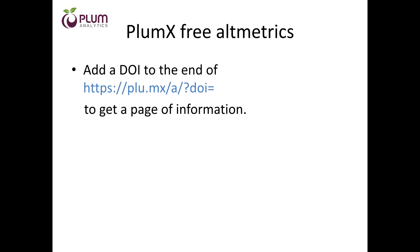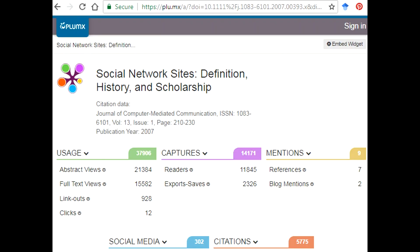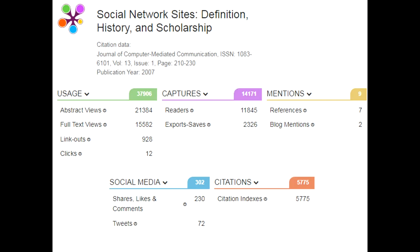PlumX offers some free altmetrics for individual articles. Plum is a company owned by Elsevier that collects altmetrics. If you add a DOI to the end of their URL, you get a page of information about the article. This is a very famous article with very high altmetrics scores — much higher than all of my research put together.